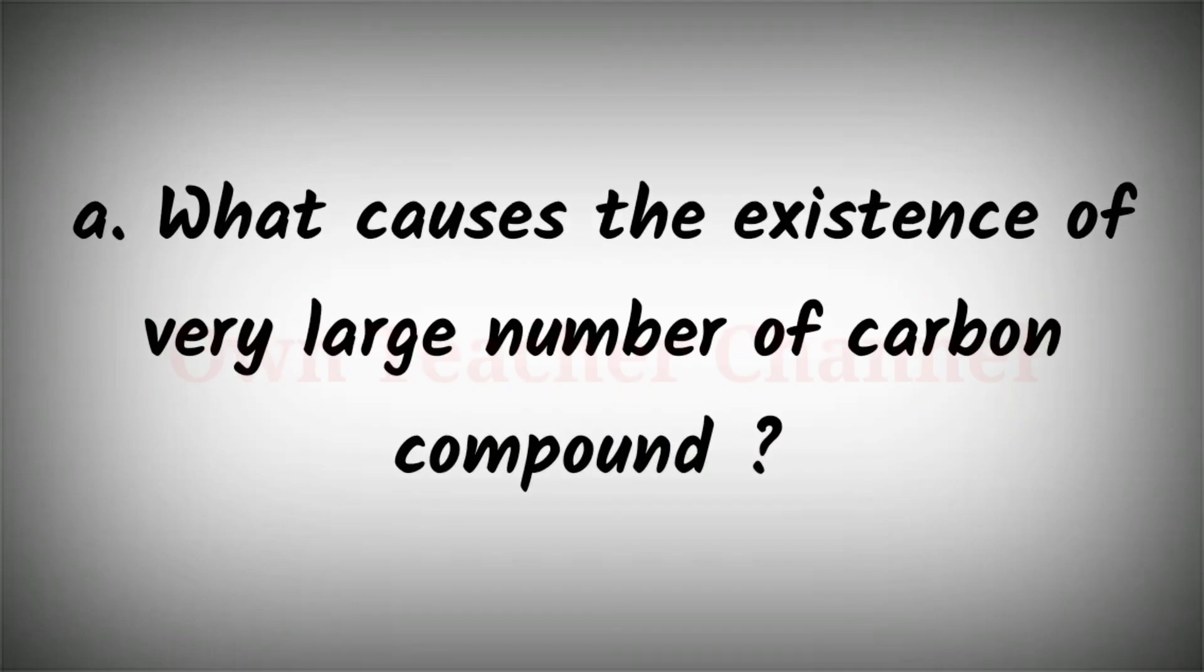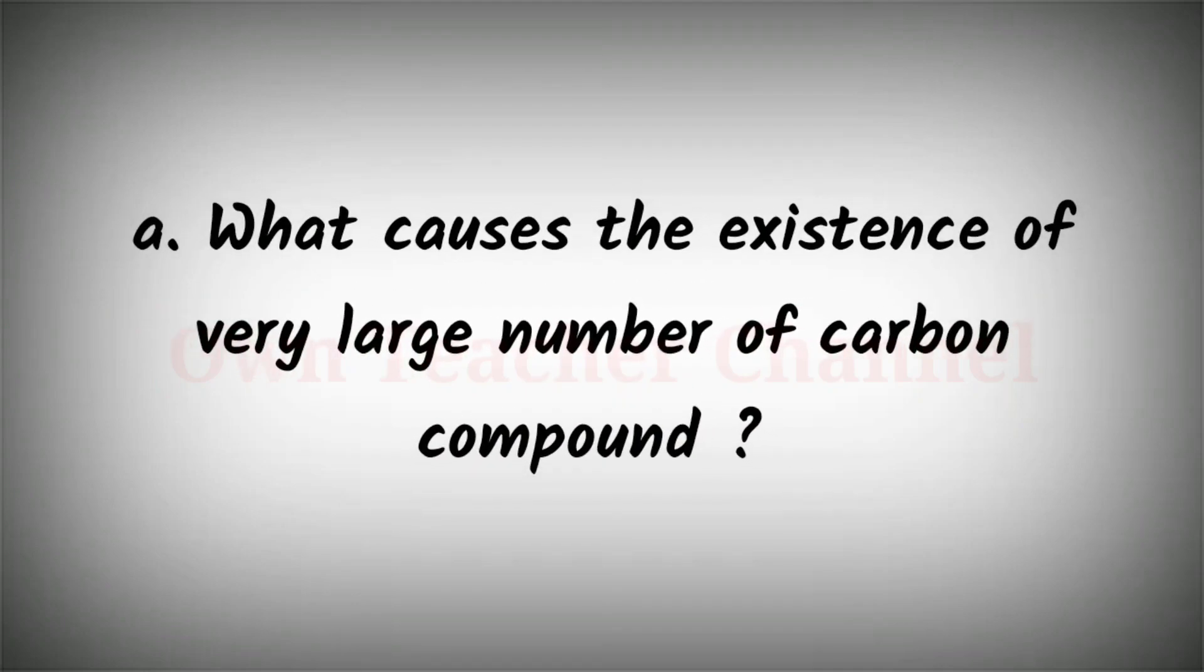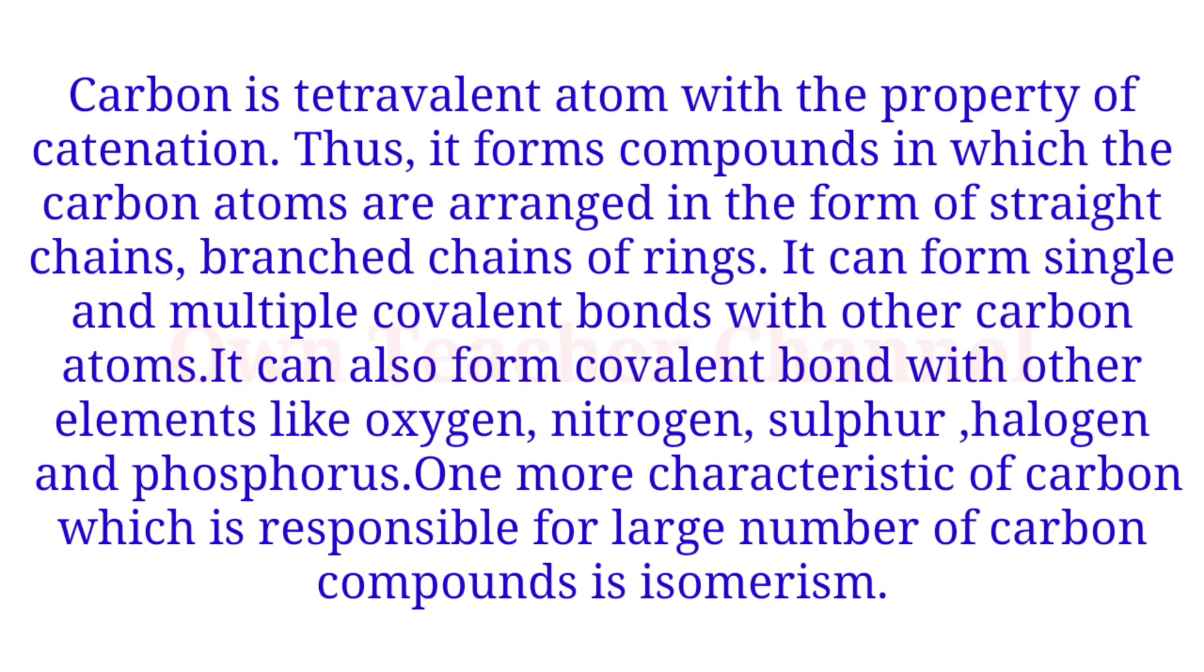A: What causes the existence of very large number of carbon compounds? Carbon is a tetravalent atom with the property of catenation. Thus it forms compounds in which the carbon atoms are arranged in the form of straight chains, branched chains or rings. It can form single and multiple covalent bonds with other carbon atoms. It can also form covalent bonds with other elements like oxygen, nitrogen, sulfur, halogen, and phosphorus. One more characteristic of carbon which is responsible for large number of carbon compounds is isomerism.